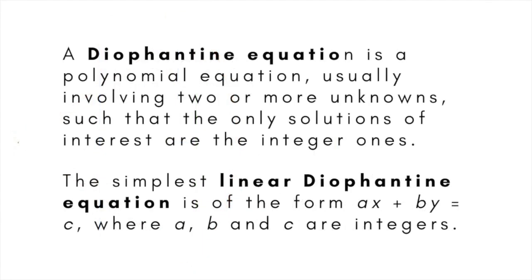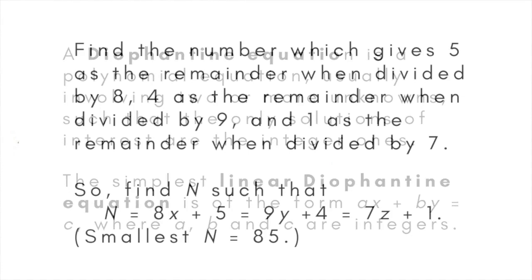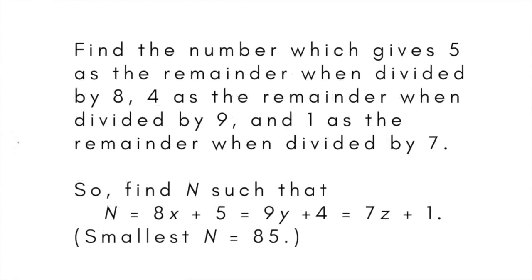Since ancient times, Indian mathematicians had been fascinated by the problem of finding integer solutions to Diophantine equations. A linear Diophantine equation is of the form ax plus by equals c, where a, b, and c are all integers. In his commentary on the Aryabhatiya, the 7th century Indian mathematician Bhaskara gives this example: find the number which gives 5 as the remainder when divided by 8, 4 as the remainder when divided by 9, and 1 as the remainder when divided by 7. This means finding a value n such that n equals 8x plus 5, equals 9y plus 4, equals 7z plus 1. It turns out that the smallest value for n is 85.